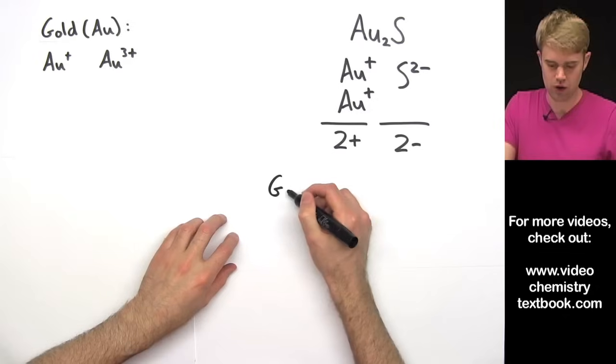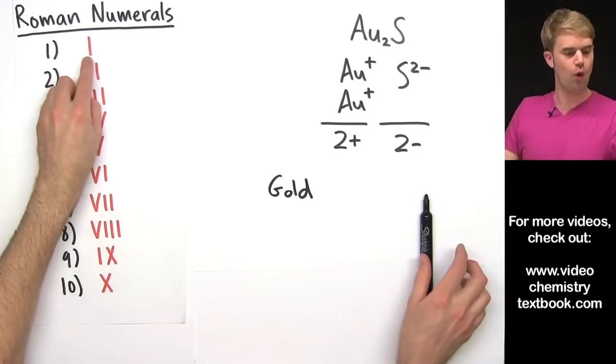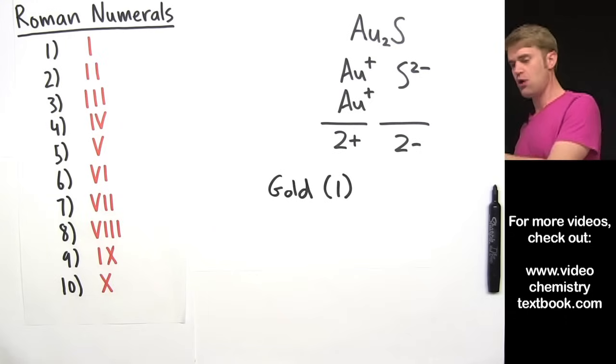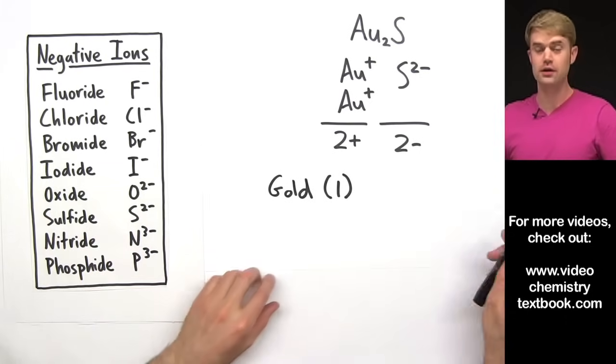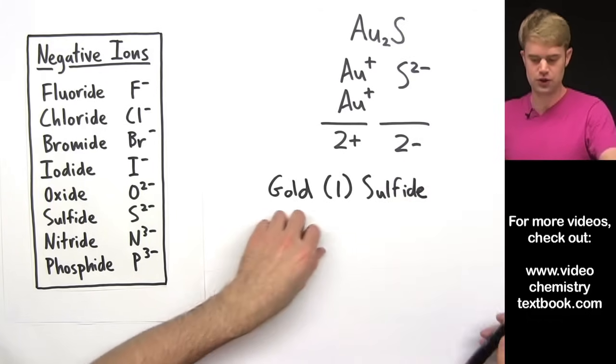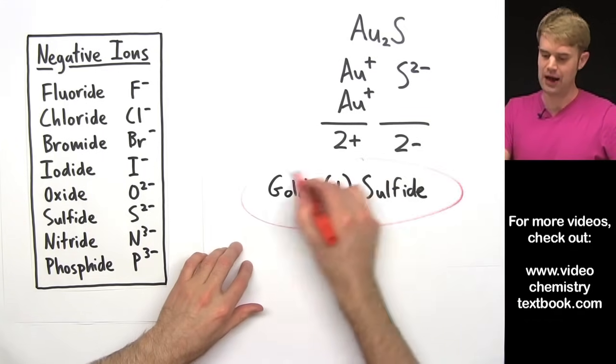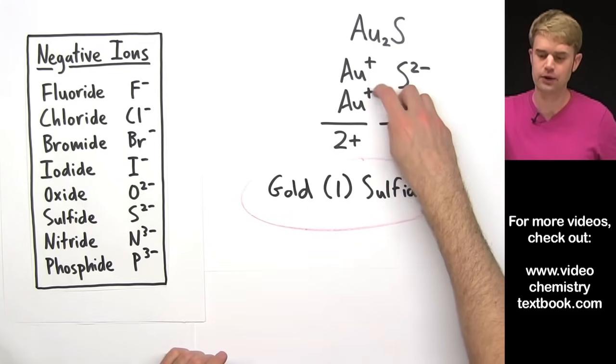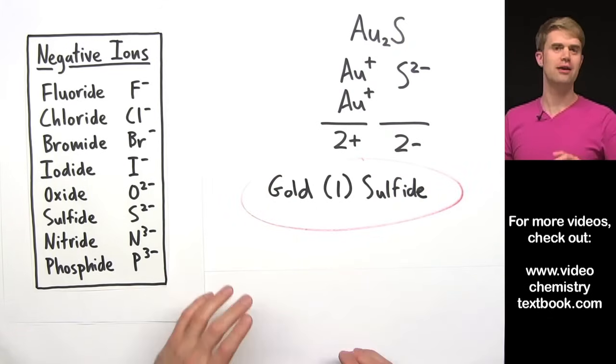So we've figured out in this case that our charge on gold is 1+. So we're going to call this gold, and then we'll use the Roman numerals, gold(I) in parentheses. And for S, when S is a negative ion, S2-, we call it sulfide. As a neutral element, it's called sulfur, and then we add that -ide to the end of it when it becomes a negative ion. So again, this 1 here in parentheses refers to the charge on gold. It doesn't have anything to do with the number after gold. All right, let's do a couple more.